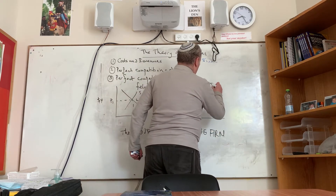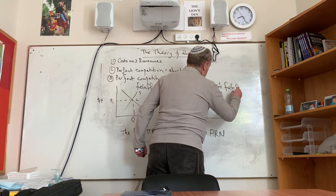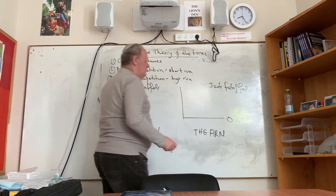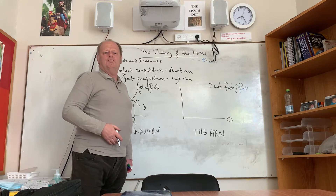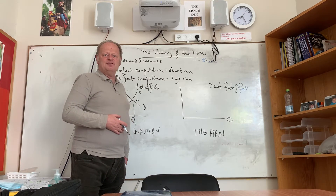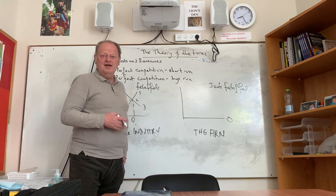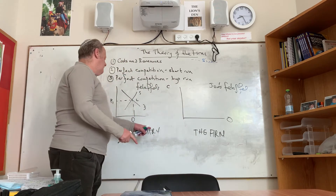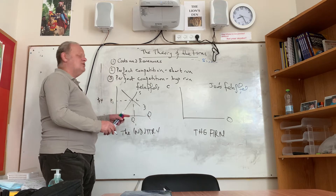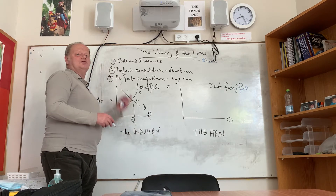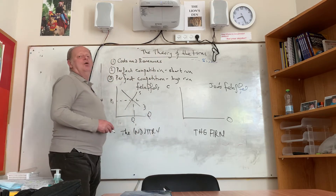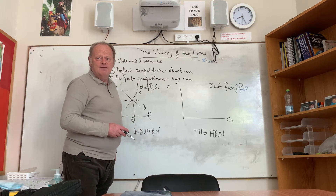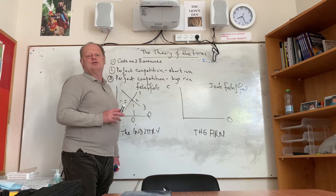So let's do the diagram for Joe's Falafel. When we're dealing with the firm, we don't talk about quantity — we talk about Joe's output. Has he produced 10, 100, or 1,000 falafels a day? That's his output — a very small percentage of the total number of falafels produced in town. We use CP — costs and price — on the same axis, with cost curves in red and revenue curves in green.